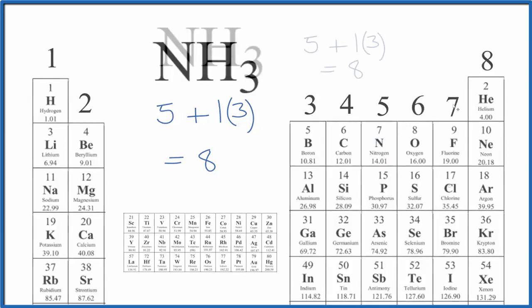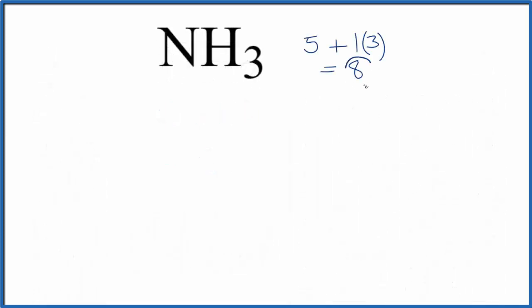Let's write the Lewis structure. So we have a total of 8 valence electrons for NH3. We'll put nitrogen in the center, and then we'll put 3 hydrogen atoms around that. We'll put 2 between atoms, and that's going to form the chemical bond between the nitrogen and the hydrogen.